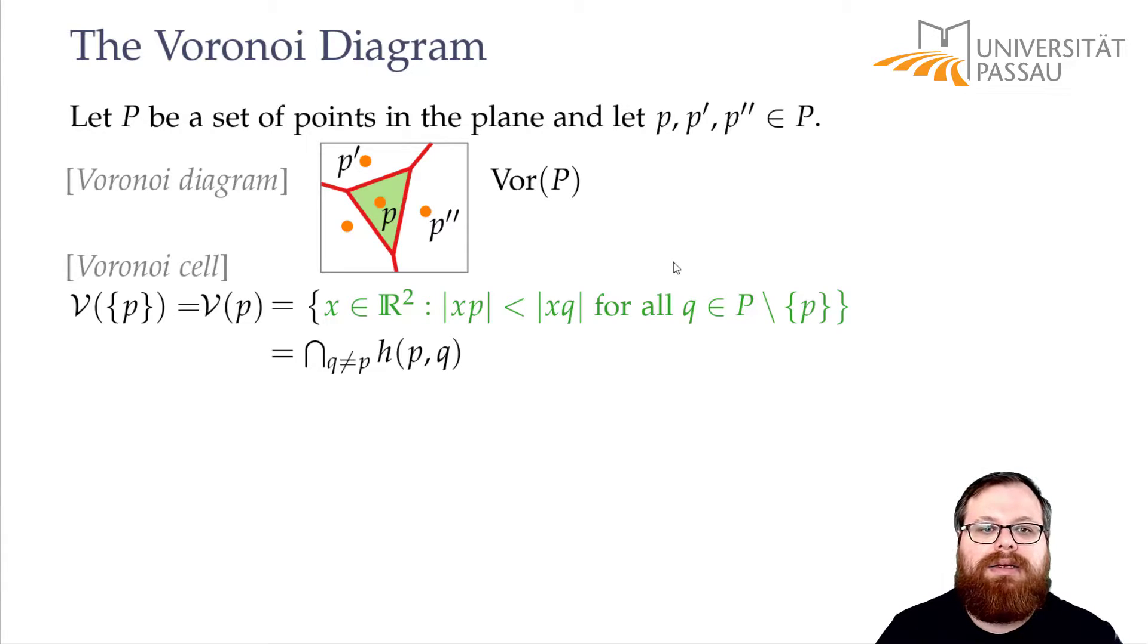Then we get exactly the cell. Because for every other point, if a point lies inside this half-plane, then it's closer to P than to the other one. If we intersect them, then it's closer to P than to every other point. So we get exactly the Voronoi cell.